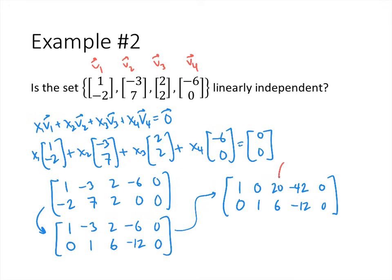Now notice that x3 and x4 are free variables. That means this vector equation has non-trivial solutions — it's got a different solution for each value of x3 and x4 that we might choose. So this vector equation has lots of solutions, certainly more than just the trivial solution. So the answer to the question 'are these vectors linearly independent?' is no. Linearly independent means the only solution found was the trivial solution; here we found lots of solutions, so the vectors are not linearly independent.